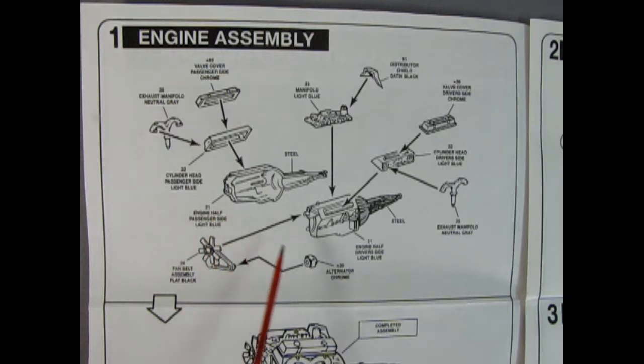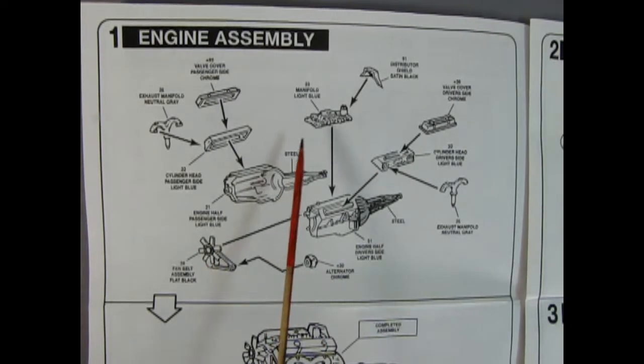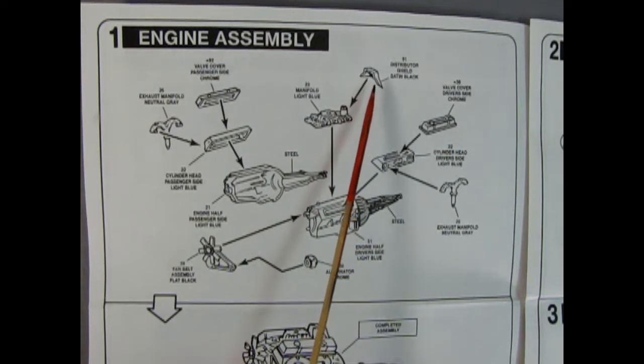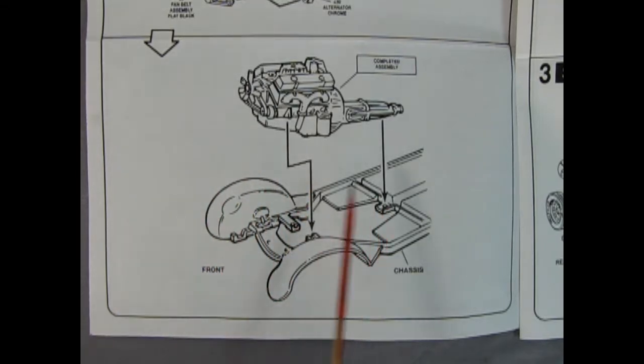Here we have our Corvette motor, the left and right hand side block with the front timing chain cover molded in place as well as our manual transmission out the back. There's our cylinder heads, valve covers, the Siamese exhaust manifolds as well as the alternator and our fan belt and pulley assembly. Then we've got our intake manifold with the distributor molded in place and then we have our distributor shield up here. The entire engine assembly then snaps in very smartly into our chassis.